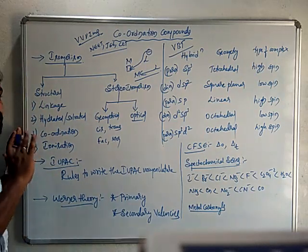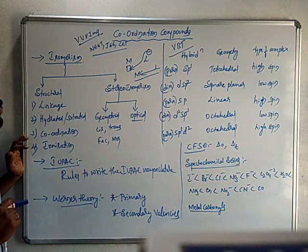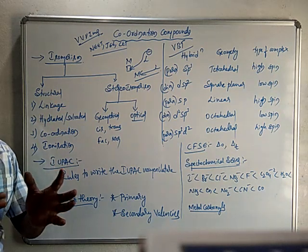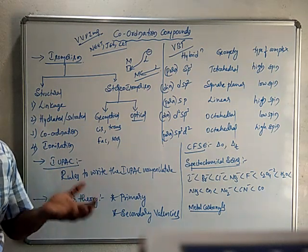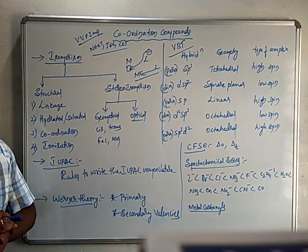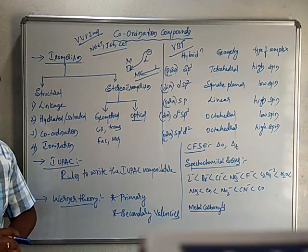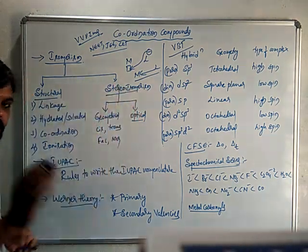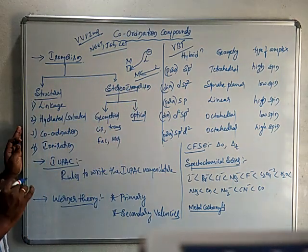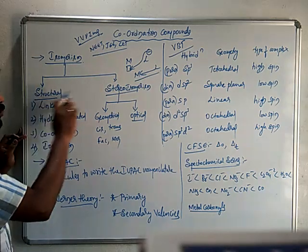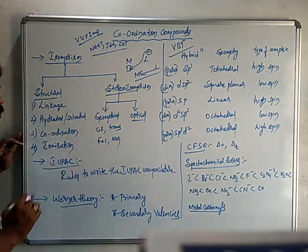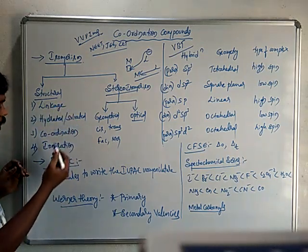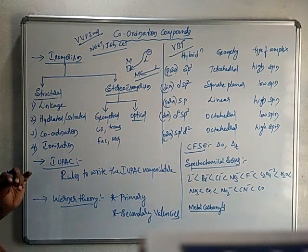The main important topics in this chapter include isomerism, which is quite similar to organic compounds. In coordination compounds, isomerisms are classified into two types: structural and stereo. Structural isomerism includes linkage isomerism, hydrated or solvated isomerism, coordination isomerism, and ionization isomerism.